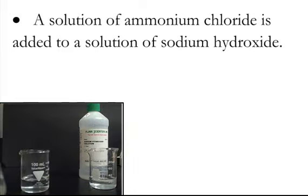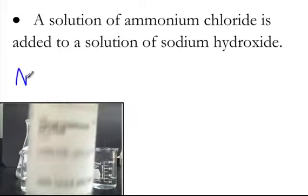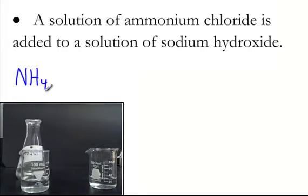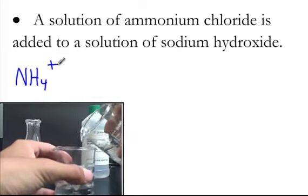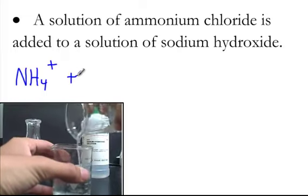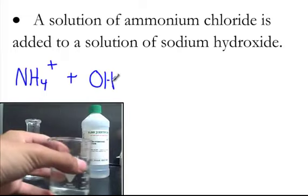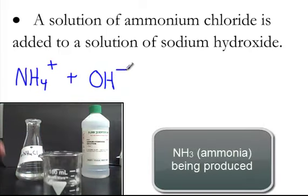The first one is ammonium chloride, and since it's a solution, we are just going to put the ammonium ion, because the chloride ion will be a spectator. We're going to add it to a solution of sodium hydroxide, and we know sodium hydroxide is a strong base, so we're going to put OH-.